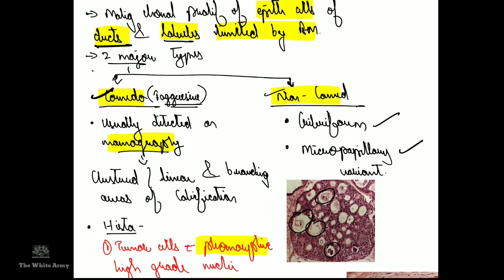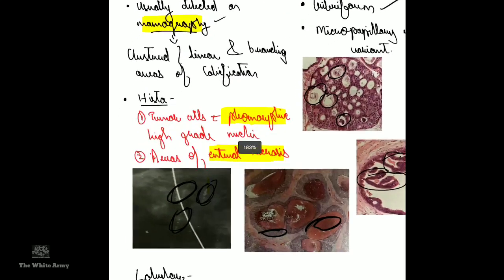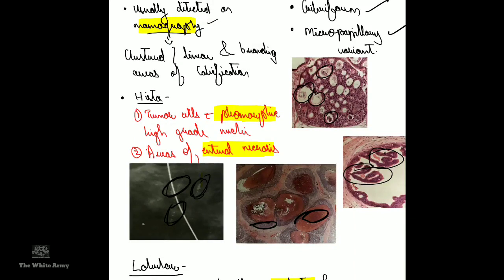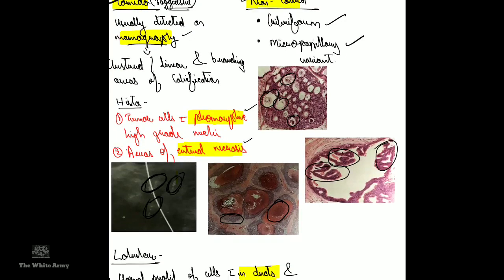Comedo carcinoma is detected by mammography and presents as a cluster of linear or branching areas of calcification. Histologically, there are two characteristic features: tumor cells with pleomorphic high-grade nuclei, and areas of central necrosis. Those tumors which lack these two features are considered non-comedo carcinoma.